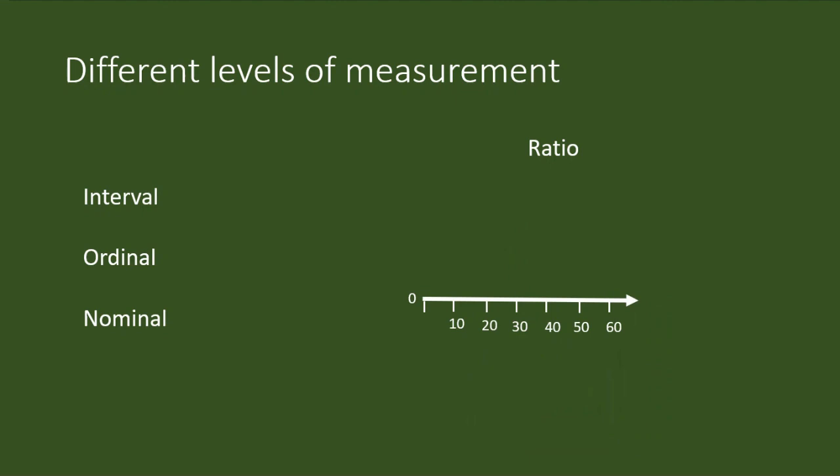In ratio level, the measurement starts from 0. And from one point of measurement to the other point of measurement, the intervals will be equal. Hence, there will be a standard variation of the scores in a measuring tool with ratio level.